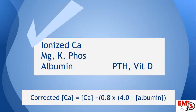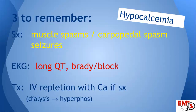As far as labs go, make sure you're checking not just a serum calcium but an ionized calcium, magnesium, phosphorus, and potassium. Make sure you get an albumin level, and then think about checking your parathyroid and vitamin D labs.